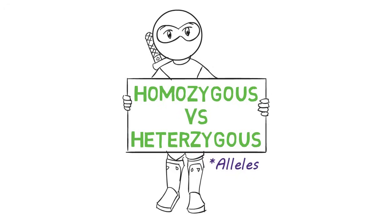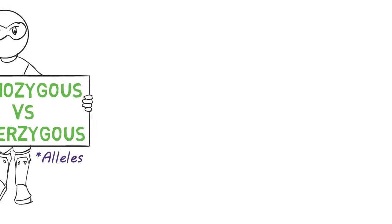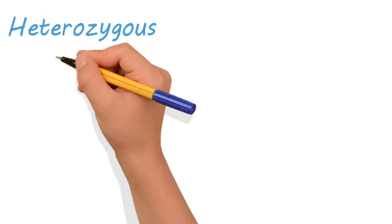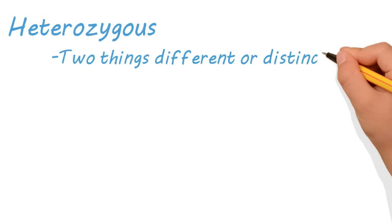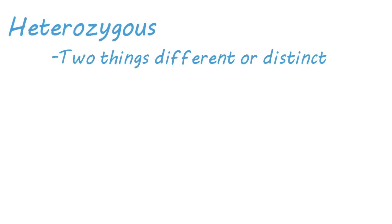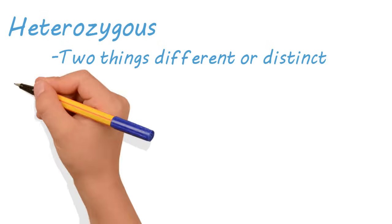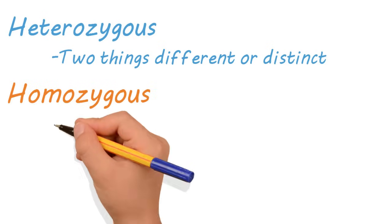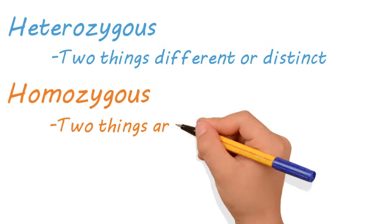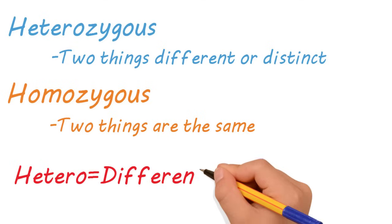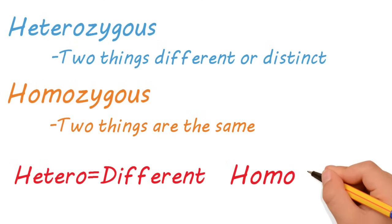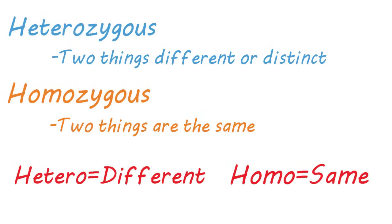Let's start by breaking down the terms. Anytime you encounter the term heterozygous, you should know that it's referring to two things being different or distinct from one another, whereas homozygous refers to two things being the same. Basically, hetero equals different, and homo equals same.